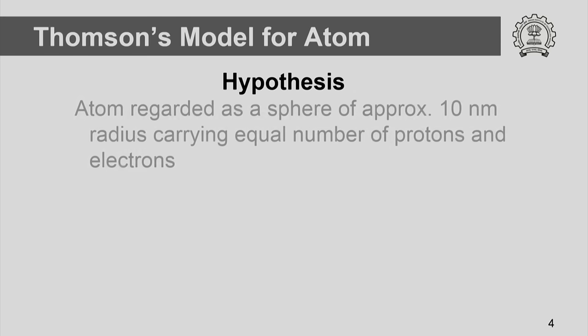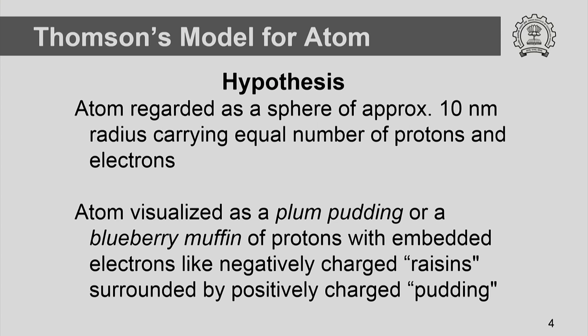One of the hypotheses advanced by J.J. Thomson was that atoms are small spheres of approximately 10 nanometer radius, and they carry equal numbers of protons and electrons. This was important because you had to explain electrical neutrality. Moreover, the atom was visualized as a plum pudding or a blueberry muffin in which protons and electrons are evenly distributed, with electrons like negatively charged raisins surrounded by a positively charged pudding of protons.